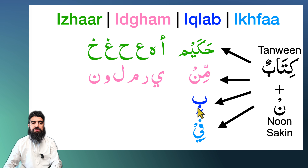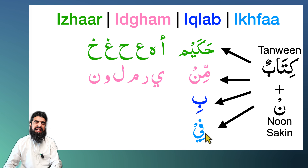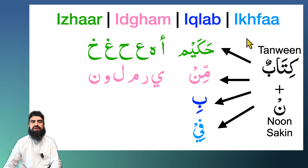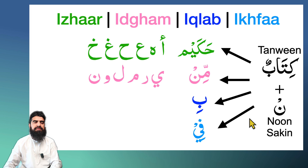The third rule is for the letter بَا — so if you get بَا after noon sakin or tanween, it is called إِقْلَاب. You pronounce it with a meem sound: مَنْ بِهِ becomes pronounced with that meem. And then any other letter after noon sakin or tanween — you pronounce it with إِخْفَاء, a nasal sound: مَنْ فِي.